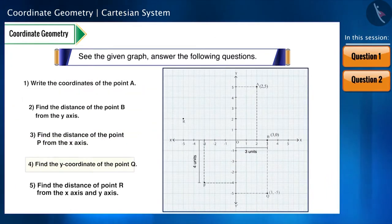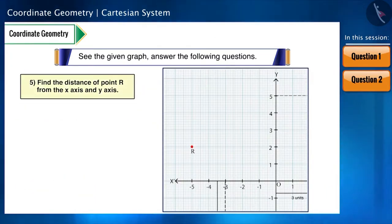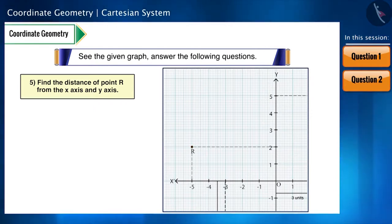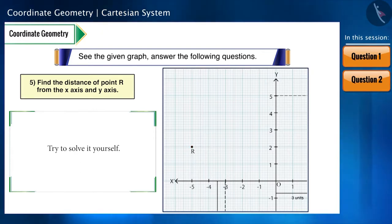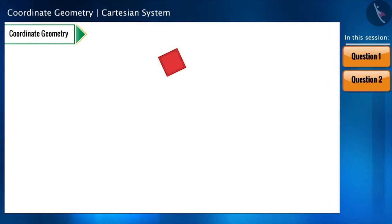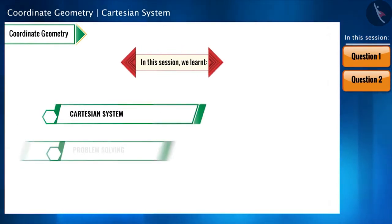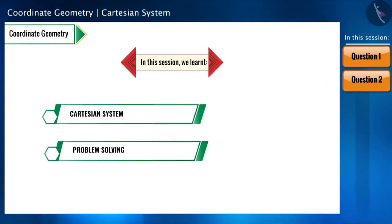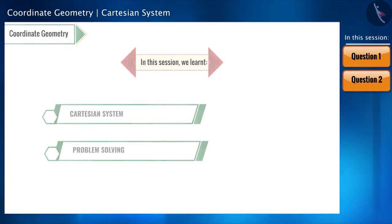Let us now take the last question of this session. Sub-question 5: find the distance of point R from the X and Y axes. Solve this question yourself and find the answer. That's all for this video — we solved some questions related to the Cartesian system. See you in the next video with some more interesting questions. Thank you.